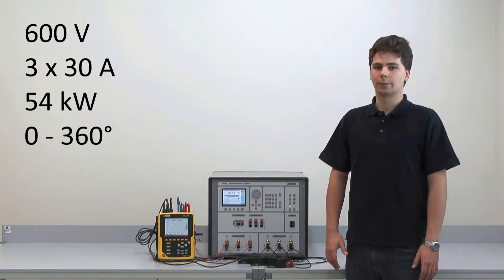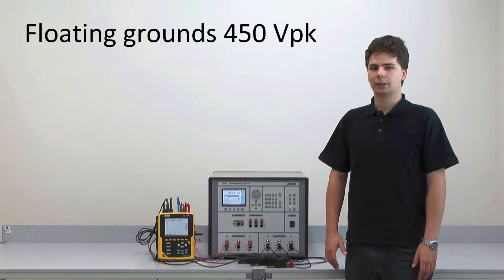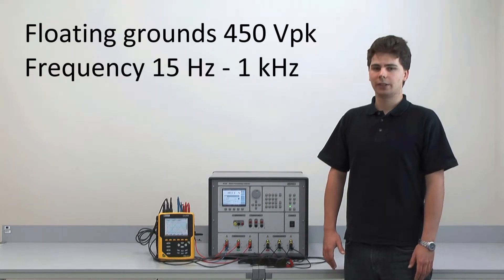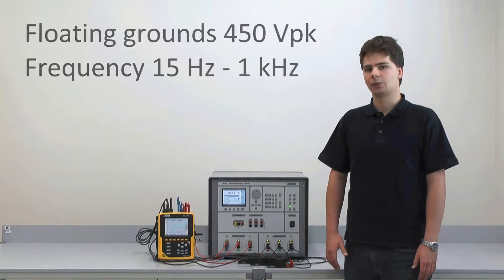But what's extraordinary about the M133C is its ability to work with these outputs. First of all, its current output grounds can float up to 450 volts and its fundamental frequency range is 15 Hertz to 1 kilohertz, so it can be used for calibration of all types of power analyzers unlike some other competitive instruments.